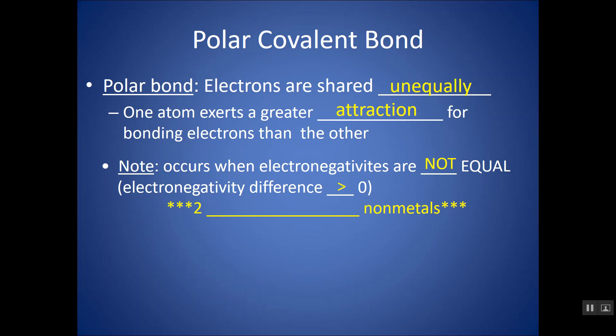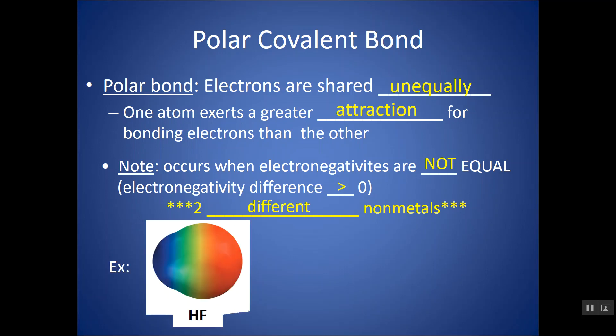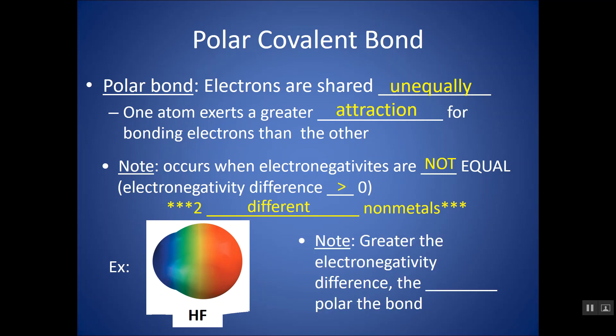The further the electronegativity difference is from zero, the more polar the bond is. This will obviously be the case when you have two different non-metals bonded together, like a C and an O, or an H and an F. Essentially, the electrons are going to hover closer to one atom than the other because one atom will pull a little harder on electrons. The greater the difference in electronegativity, the more polar the bond.